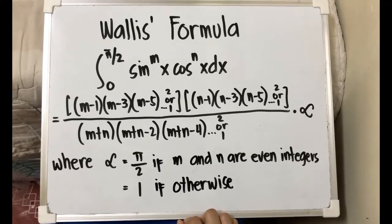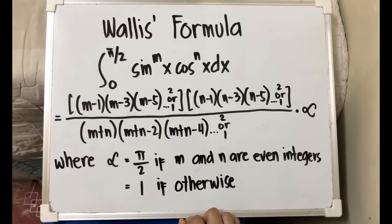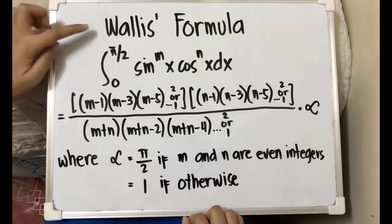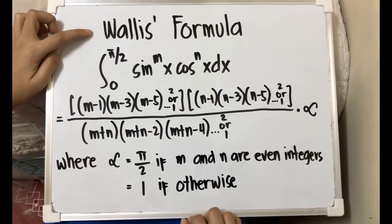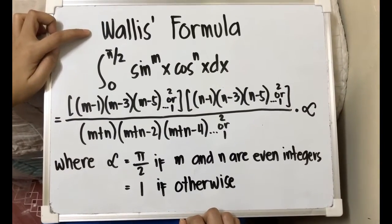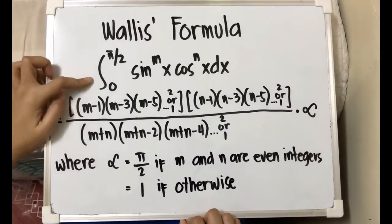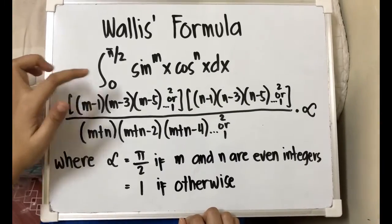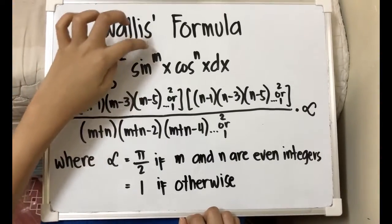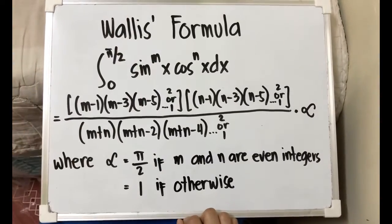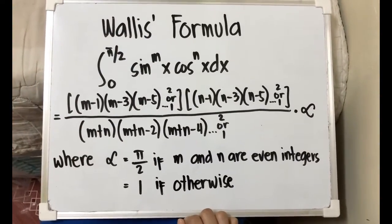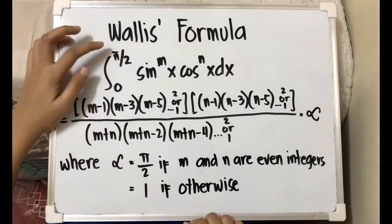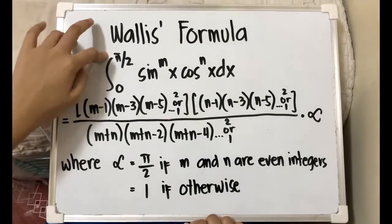Hello everyone! In this video, we will be discussing Wallis' formula. Wallis' formula comes in this form: we have the definite integral of sin raised to m times x, cos raised to n times x, dx from 0 to pi over 2.